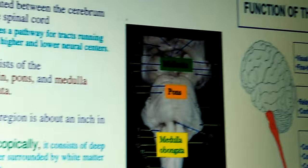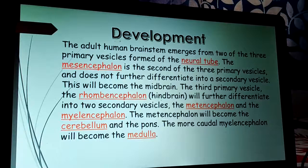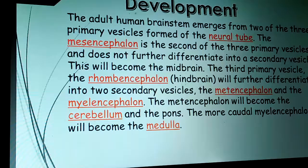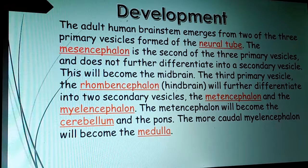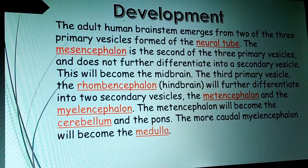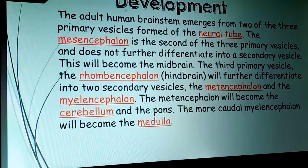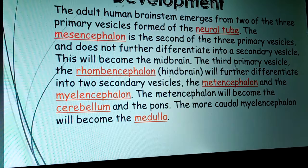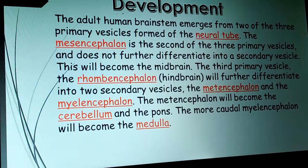The adult human brainstem emerged from two or three primary vesicles of the neural tube. The mesencephalon is the second primary vesicle and does not further differentiate — it becomes the midbrain. The third primary vesicle, the rhombencephalon (hindbrain), differentiates into two secondary vesicles: the metencephalon and myelencephalon. The metencephalon becomes the cerebellum and pons, while the more caudal myelencephalon becomes the medulla oblongata.